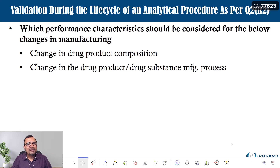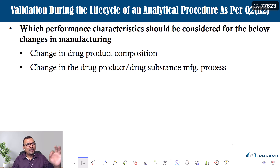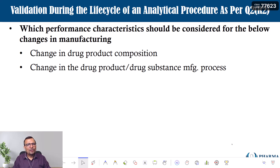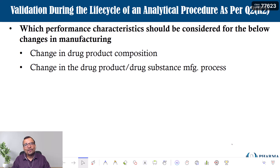You can think about conducting specificity, precision, and at most accuracy at one level — at the working level — and that can suffice the requirement in case of change in the drug product manufacturing process, provided your end product characteristic and specification is going to remain the same. You are not going to make any change in the specification, otherwise this discussion will not stand valid. The only important point is that your product characteristic is not going to get changed. In that case, only three parameters — precision, specificity, and accuracy at 100 percent level — need to be performed.